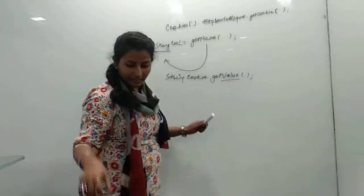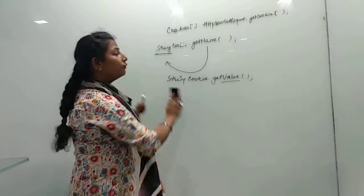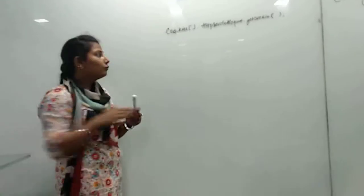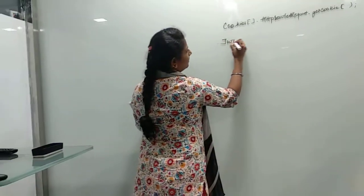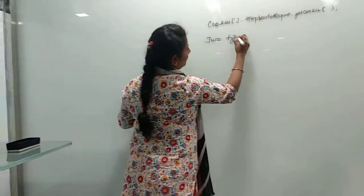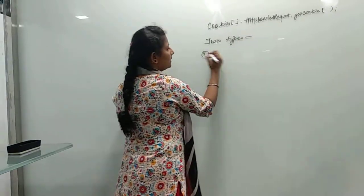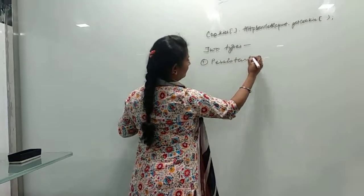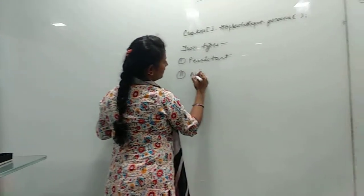Now we will discuss about the types of cookies. We have two types of cookies. First one is persistent and second one is non-persistent.